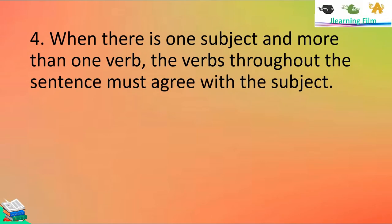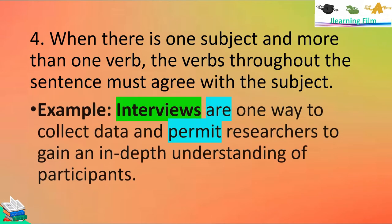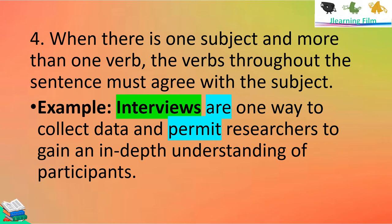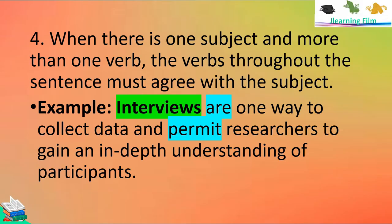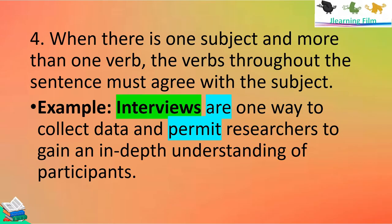Rule number four: where there is one subject and more than one verb, the verbs throughout the sentence must agree with the subject. For example, 'Interviews are one way to collect data and permit researchers to gain an in-depth understanding of the participants.' The subject is interviews, which is plural, thus it takes the plural verbs are and permit.